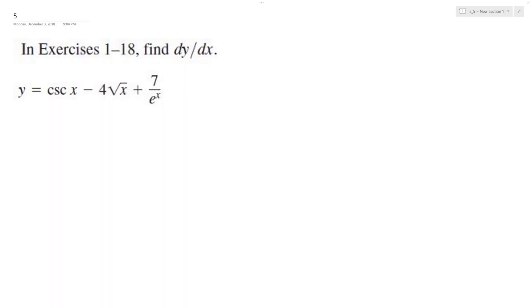All right, so we want to find the derivative of the following problem. First thing I'm going to do is rewrite this: y equals csc x minus 4x raised to the one-half plus 7e raised to the negative x.